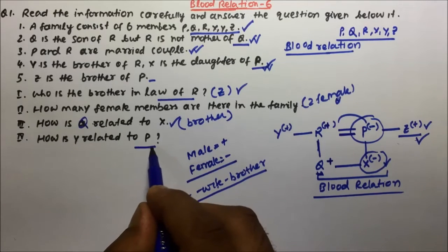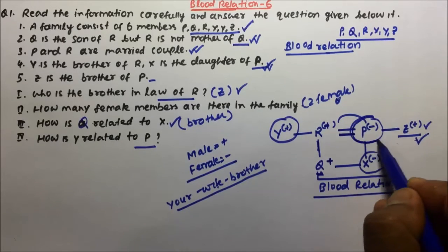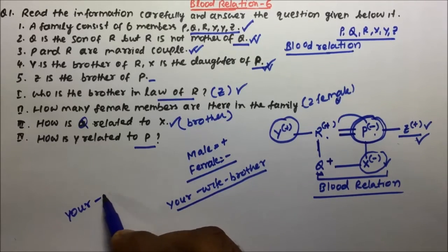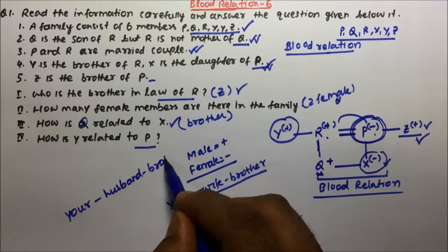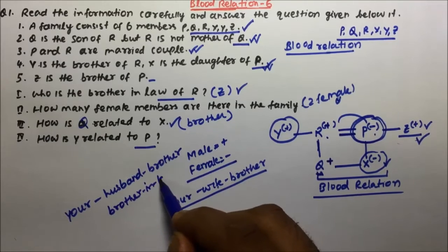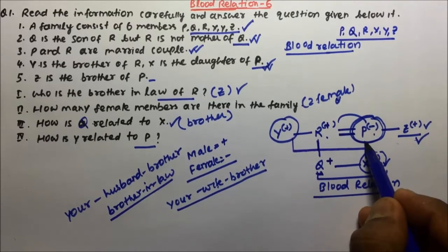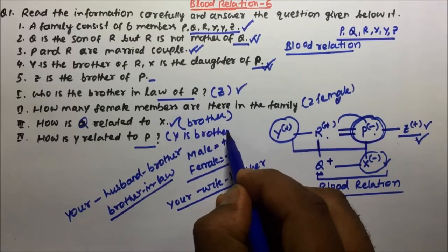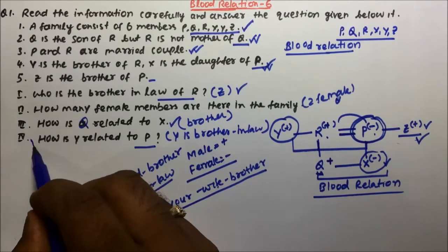Now the next question is how is Y related to P? So where is Y? Y is here and where is P? P is here. So P's husband's brother - your husband's brother will be what? Your husband's brother will be your brother-in-law. So Y is brother-in-law of P, and this is the answer for question number four.